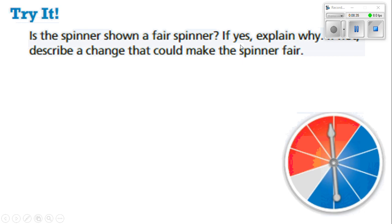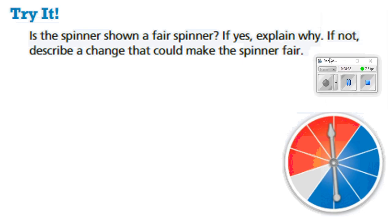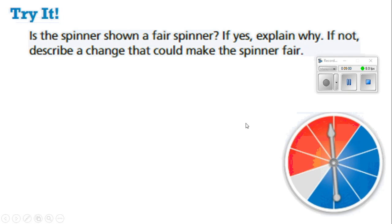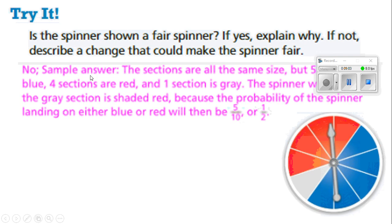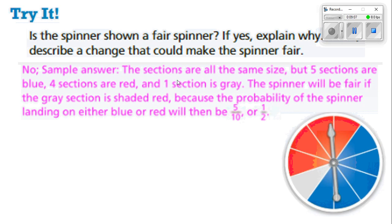Is the spinner shown a fair spinner? If not, describe a change to make it fair. There's a 50% chance it will land on blue, a four out of ten chance it will land on red, and only a one out of ten chance it will land on white. Five sections are blue, four sections are red, and one section is gray. The spinner will be fair if the gray section is shaded red, because then the probability of landing on either blue or red will be five out of ten, or one-half.